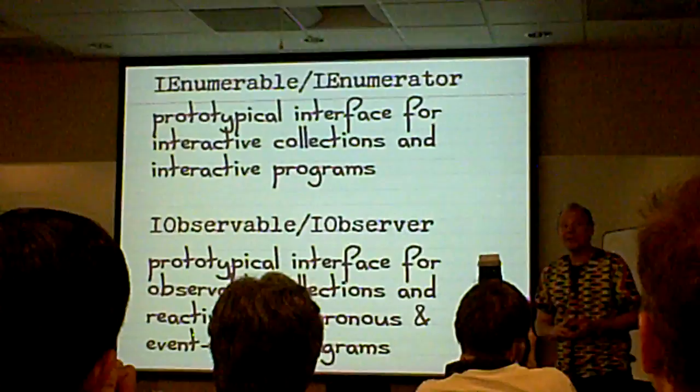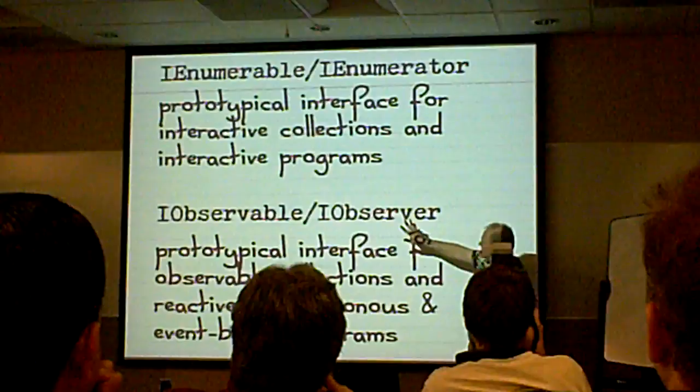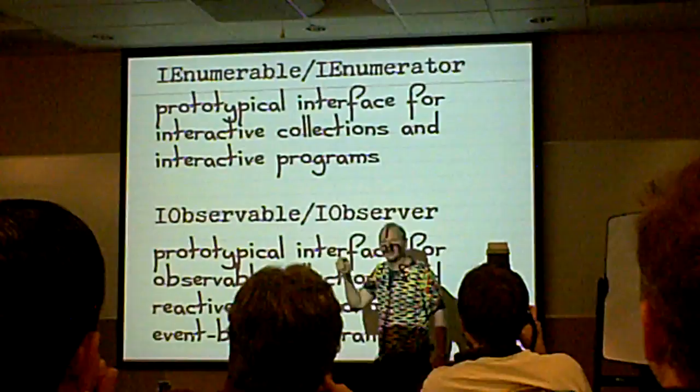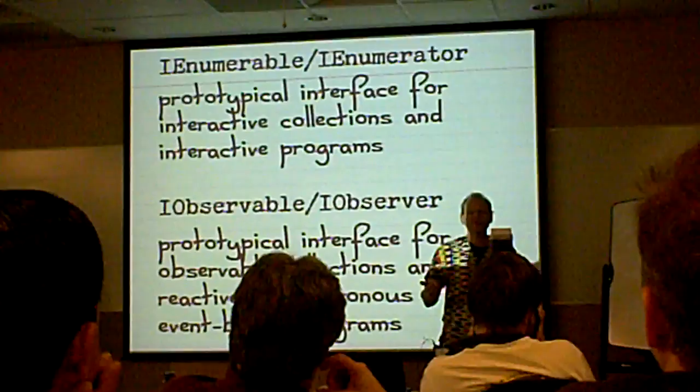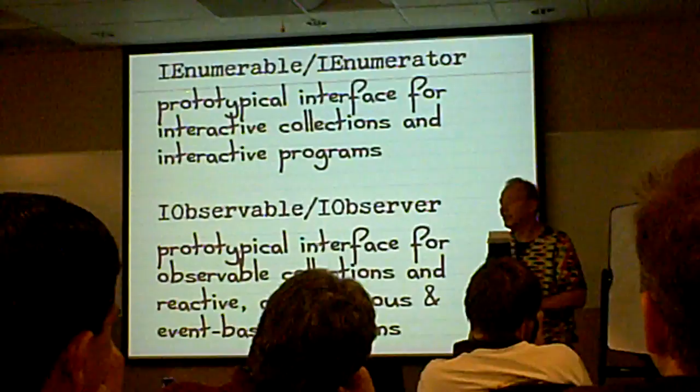So, what did we get? Well, we have now two interfaces. We have enumerable enumerator and observable observable observer. This one is for interactive programs, right? This is where you kind of pull from the environment. And this is where the environment pushes at you. And this is what you can use for asynchronous and event-based programs. What is an asynchronous program? Well, that's a program that's a collection that has at most one value.